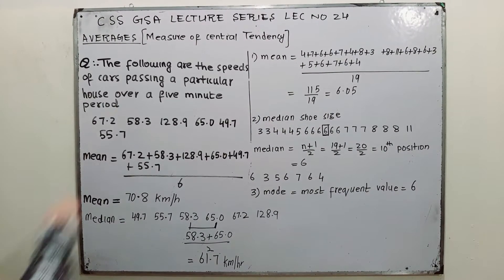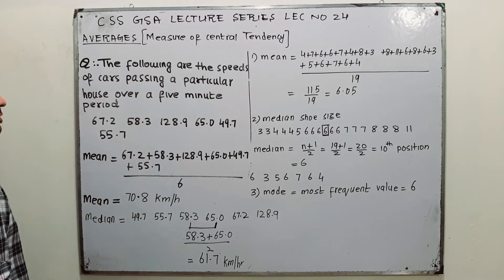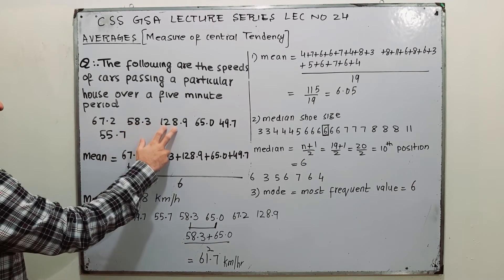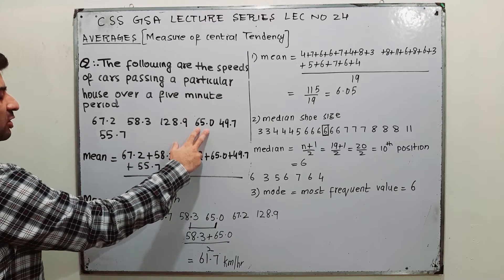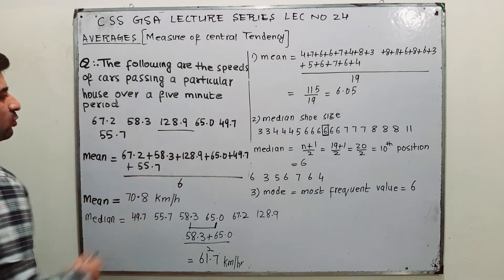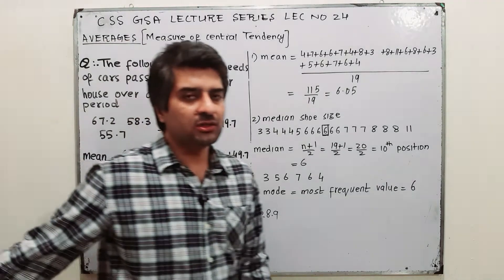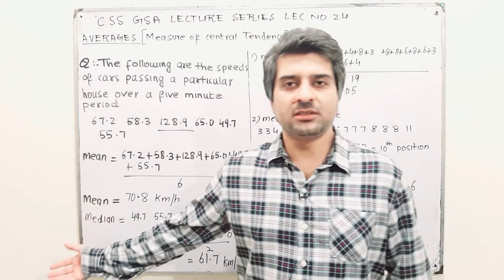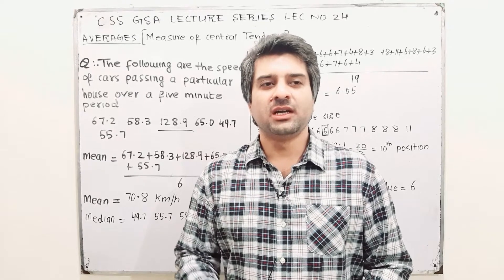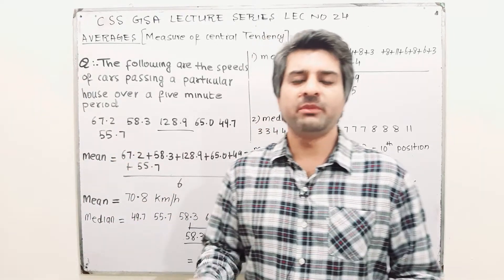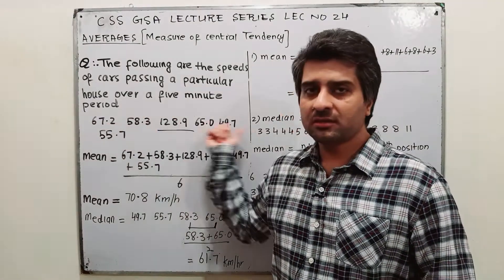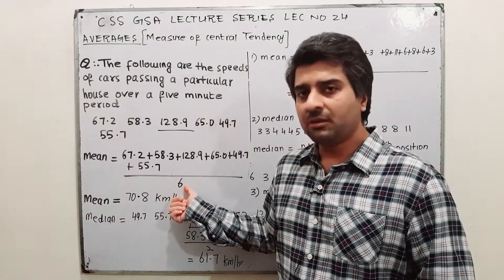The following are the speeds of cars passing a particular house over a five-minute period: 67.2, 58.3, 128.9, 65.0, 49.7, and 55.7 km/h. The value 128.9 is the odd one out — it is an extreme value. In this case, mean will not be the most suitable average.